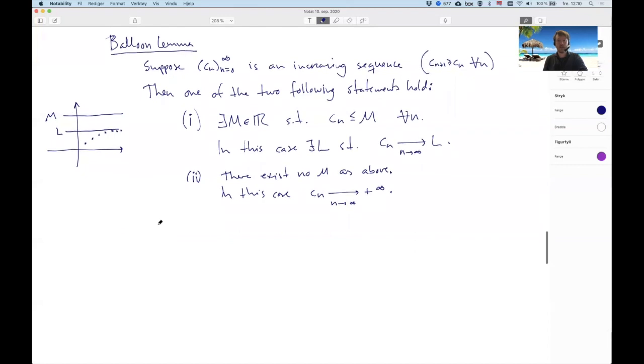So let us now look at consequence of the balloon lemma, and it's a consequence for positive series. So let's do here a proposition. And this proposition says that positive series behave really nice. But what is a positive series? Well, a positive series is a series with only positive terms.